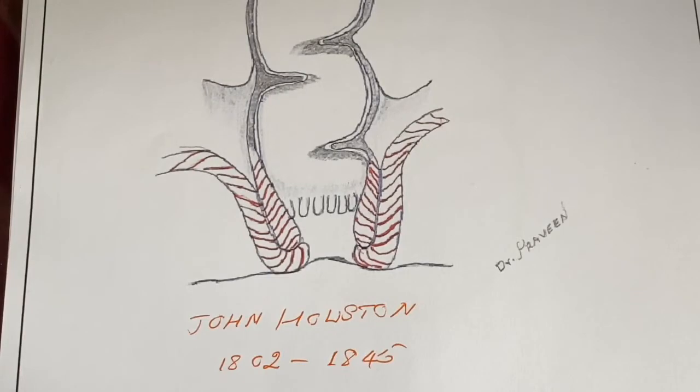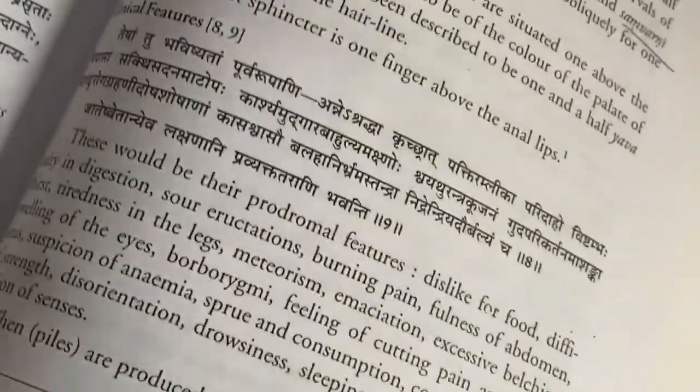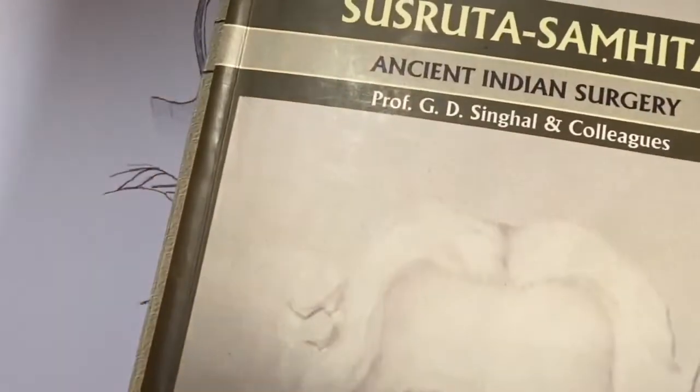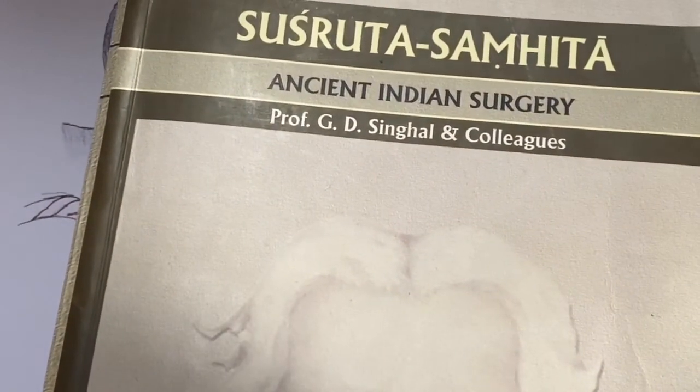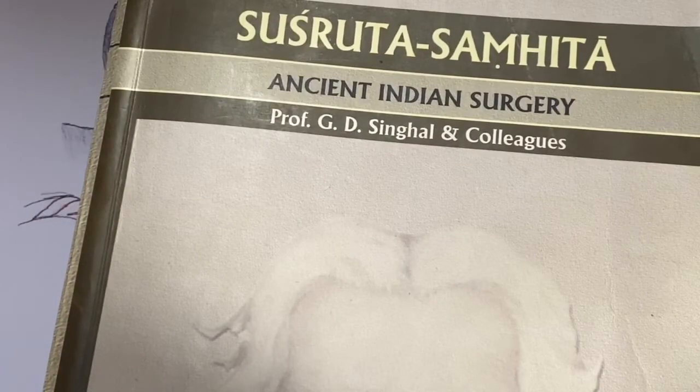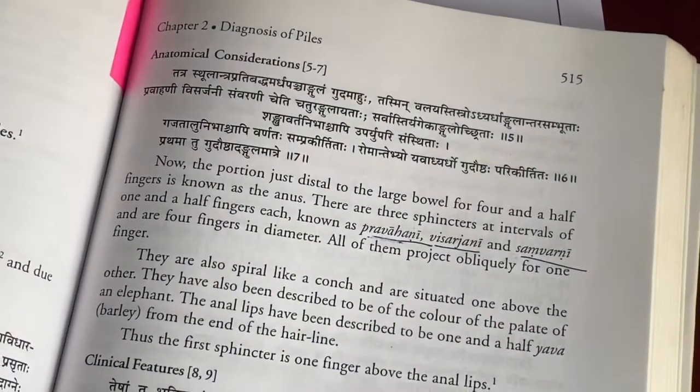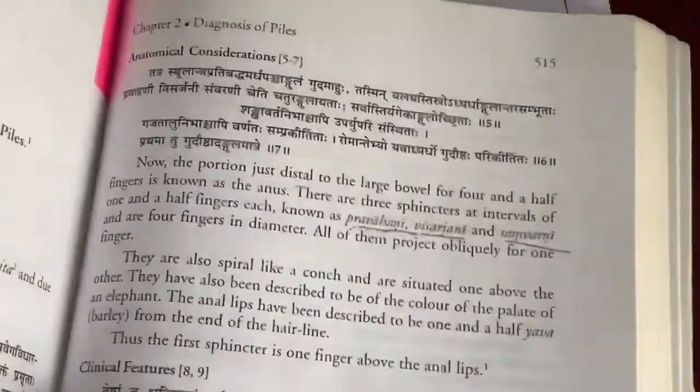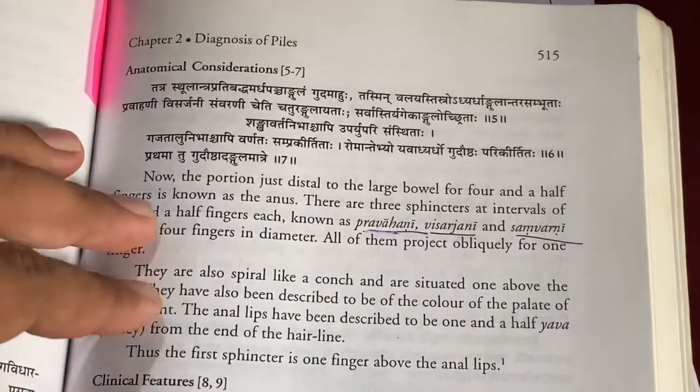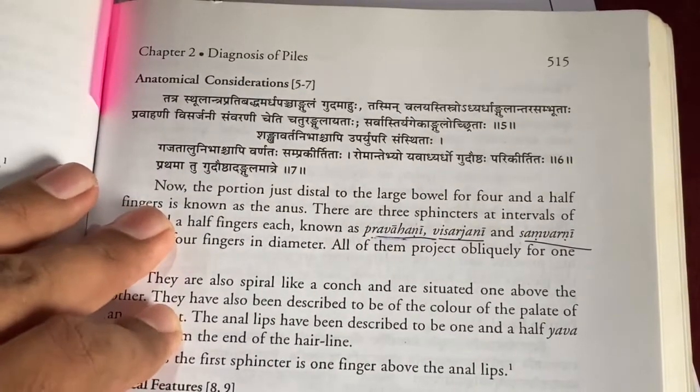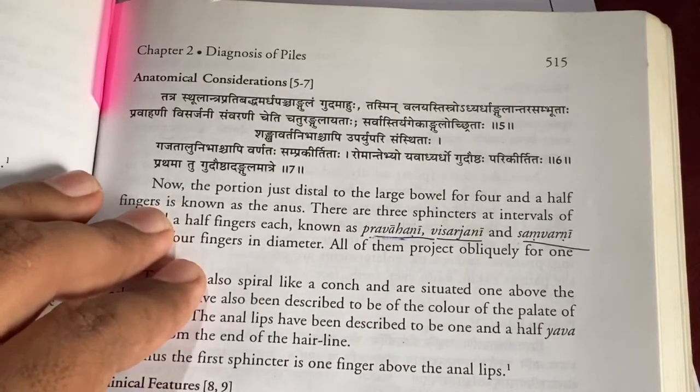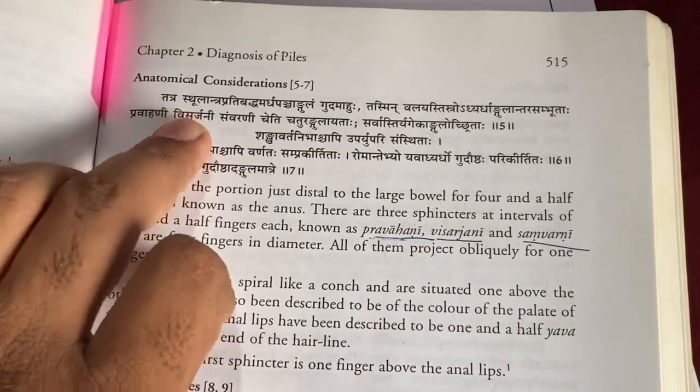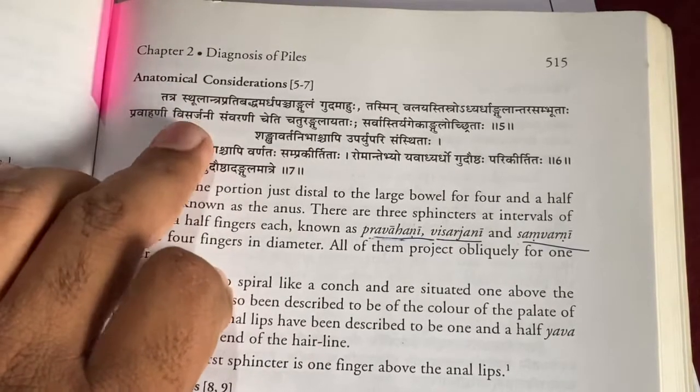When we look into other references which are available nearly about 5000 years back, I usually refer the book Sushruta Samhita, which is written or edited by Professor J.D. Singhal, in the chapter number two of Nidhanasthana. What is Nidhanasthana, if time permits I will explain in another video.